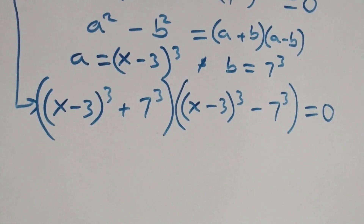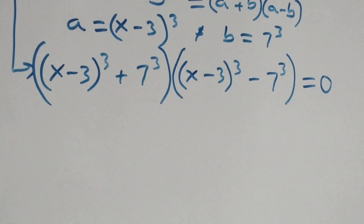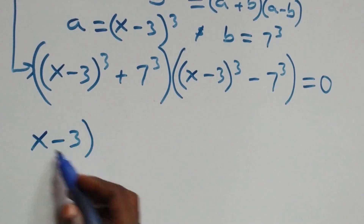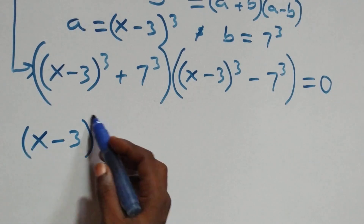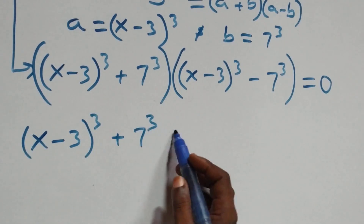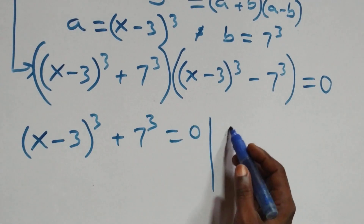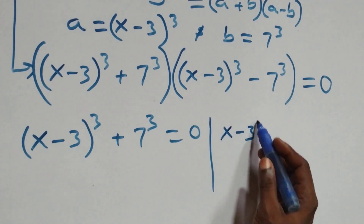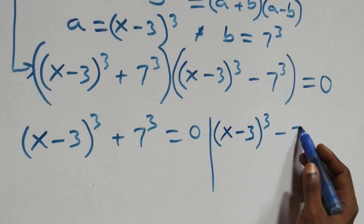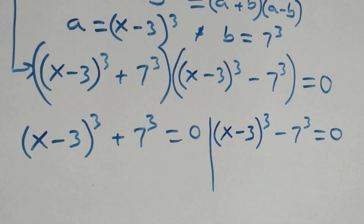Then here we have two possible cases. That is, x minus 3 all raised to power 3 plus 7 raised to power 3 equals to 0, or we have x minus 3 all raised to power 3 minus 7 raised to power 3 equals to 0.